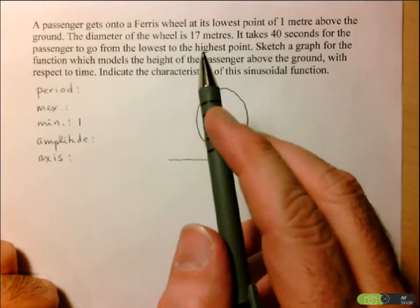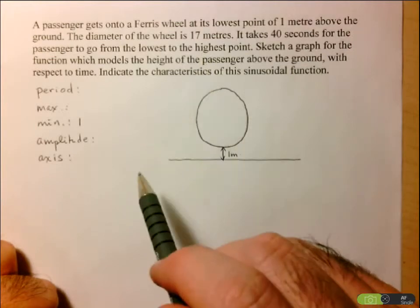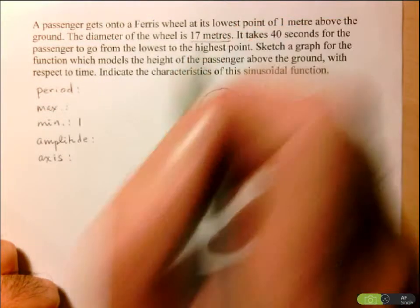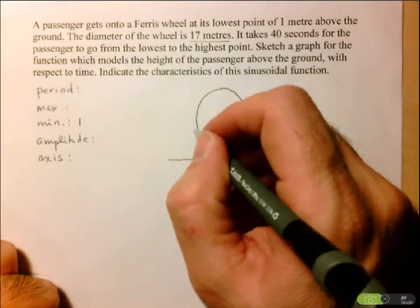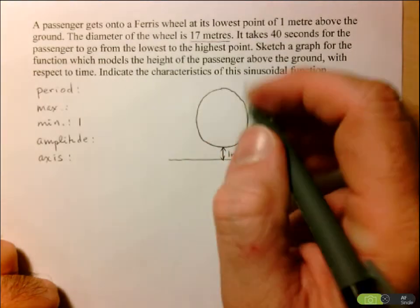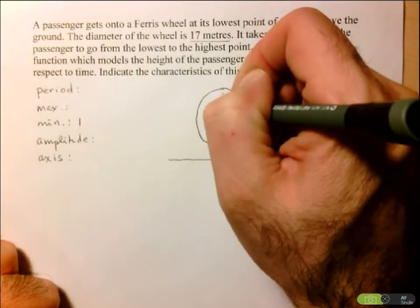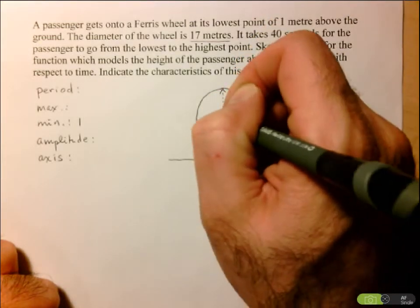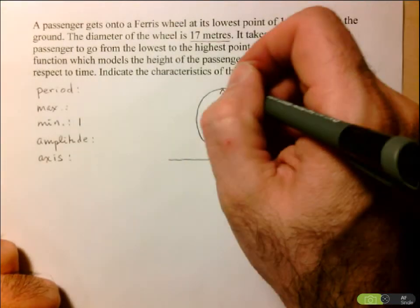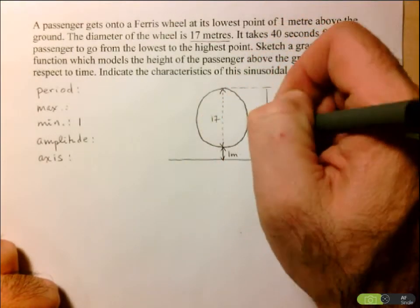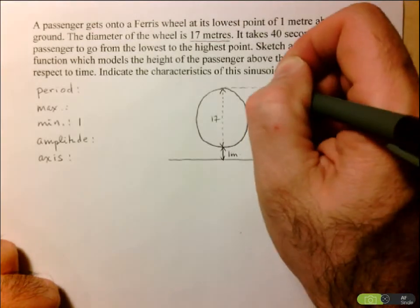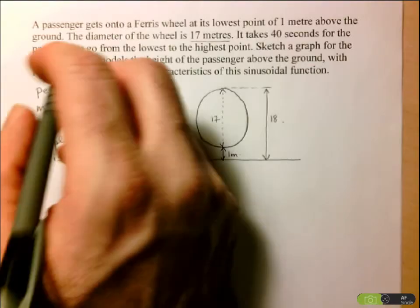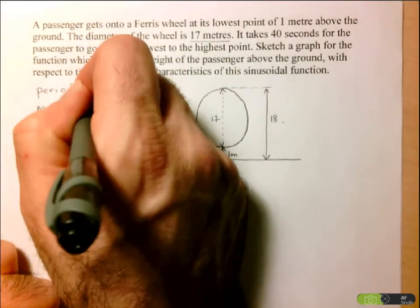Here they don't actually give us the maximum directly. What they do is they give us the diameter of the Ferris wheel, which is 17 meters. I can draw a diameter in many directions, but what I'm interested in is the diameter that's going to help me determine that maximum height. So this diameter here is 17 meters. That means that my maximum height is going to be 18 meters total. So I can now put my max as being 18.